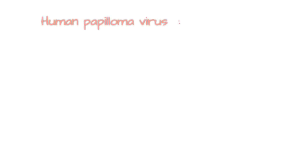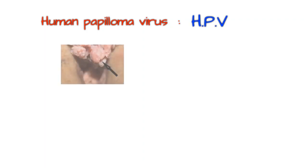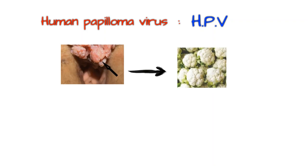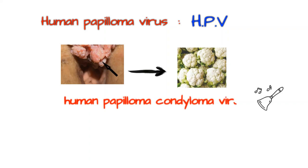Hi everyone. Today we will talk about human papilloma virus, abbreviated HPV. Its specific lesion is called condyloma acuminata because it looks like small cauliflowers. We will add condyloma to the name of the virus to remember it easily — Human Papilloma Condyloma Virus — adding the C letter of condyloma to the abbreviation. The mnemonic is HPCV.